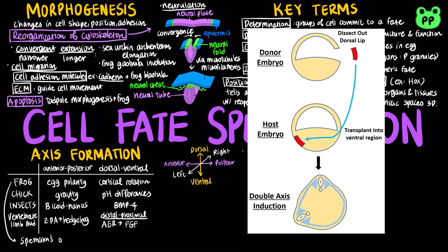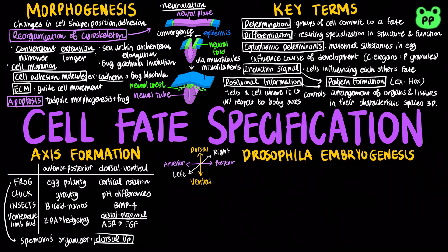They found that the transplanted dorsal lip was able to induce cells in a different region of the recipient to form structures different from their normal fate. Therefore, the dorsal lip is known as Spemann's organizer.